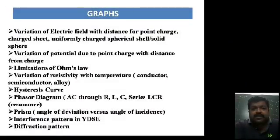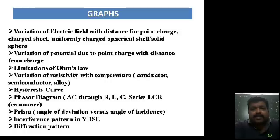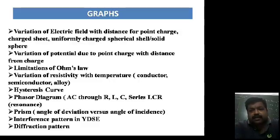There may also be graph-based questions. These include: variation of electric field intensity with distance for a point charge, charged sheet, uniformly charged spherical shell, and solid sphere; variation of potential due to a point charge with distance; limitations of Ohm's law and the current-voltage graph for non-ohmic conductors; variation of resistivity with temperature for conductors, semiconductors, and alloys; and the hysteresis curve, including the application of retentivity and coercivity for constructing permanent magnets and electromagnets. Also, phasor diagrams in the AC chapter — AC through a resistor, inductor, capacitor, and series LCR circuit — including resonance and quality factor.